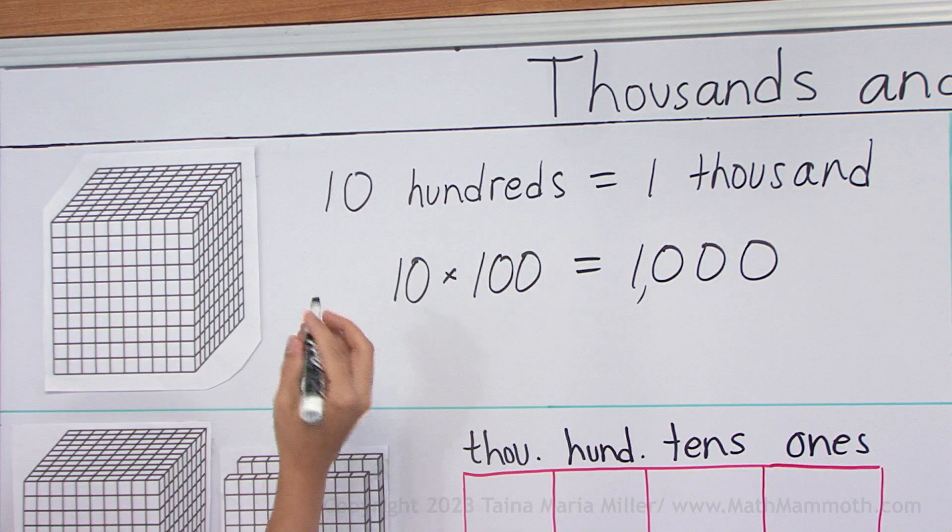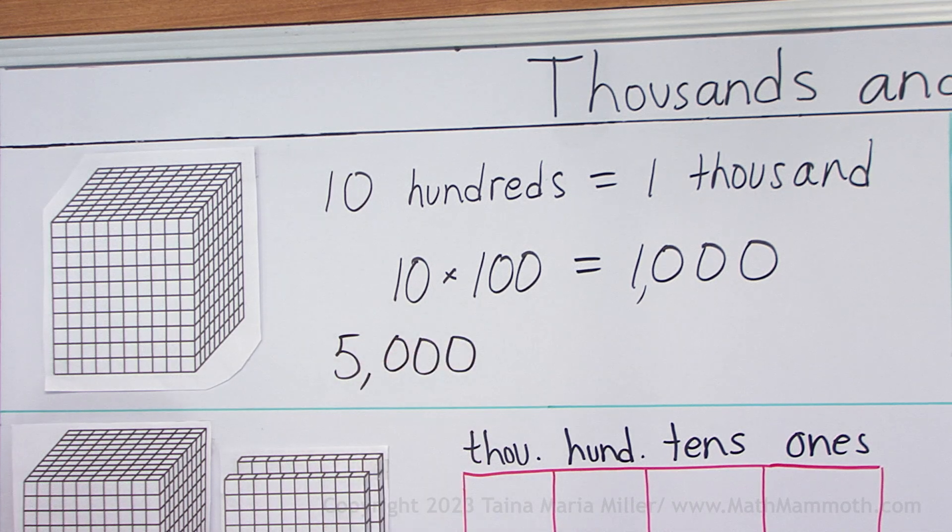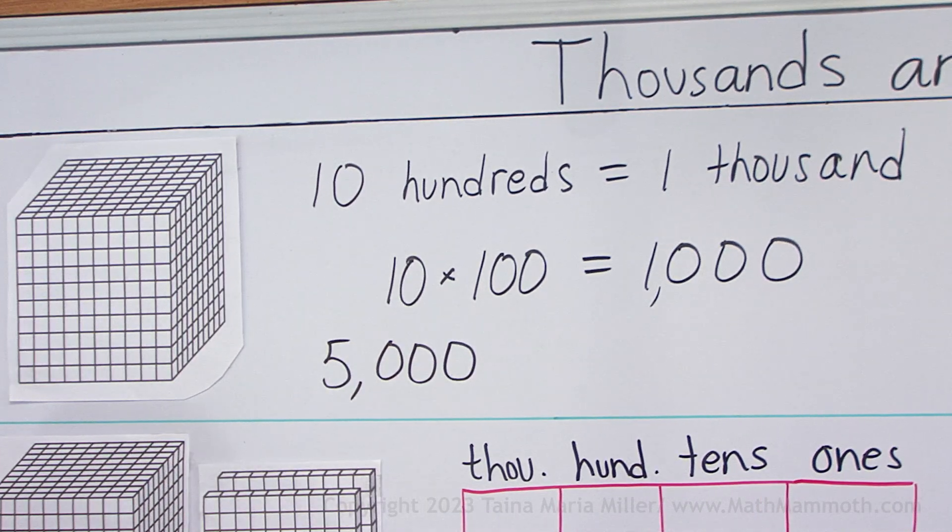So, for example, five thousand is written like this. In some other countries they use a space here, in some other countries they use a point here, but in the United States they use a comma.